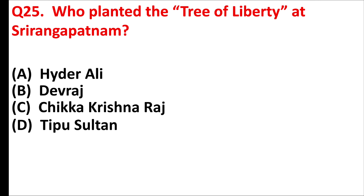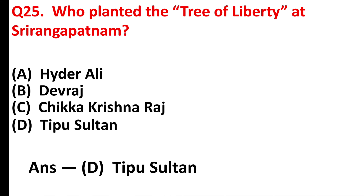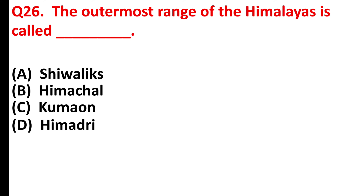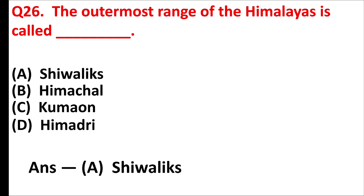Who planted the tree of liberty at Srirangapatna? Answer is option D: Tipu Sultan. The outermost range of the Himalayas is called — answer is option A: Shivalik.